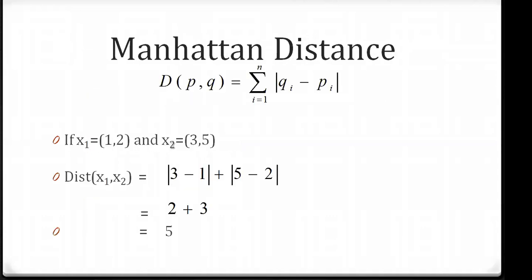First, we will deal with Manhattan distance. The formula for computing Manhattan distance between two points is the summation of |Q - P|, where Q and P are two different points. For example, with x1 = (1, 2) and x2 = (3, 5), we compute |3-1| + |5-2|, which gives us 5. So the Manhattan distance is 5.